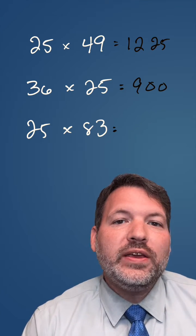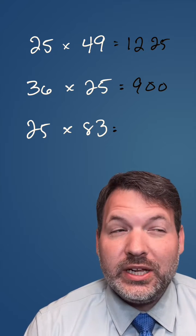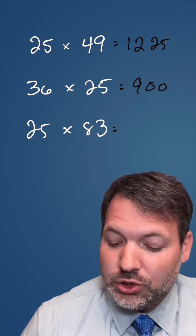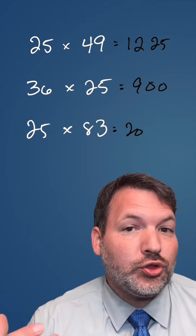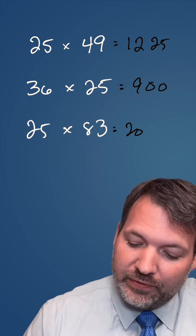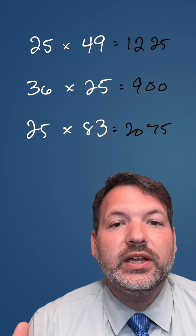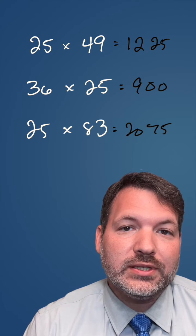One more here, try to beat me this time, 25 times 83. How many times does four go into 83? 20, very good. There's three left over, those three 25s count for 75, and so there's our answer, 2,075.